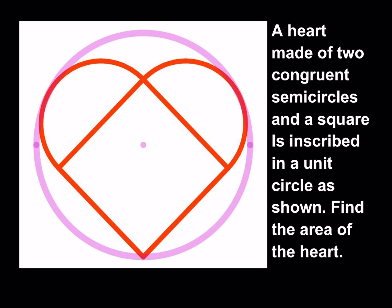So what we're going to do is first make some good connections. Notice that our heart is made up of a square and two semicircles, which basically make a full circle. So we're going to find the area of the circle and then find the area of the square, then add them up. But first we have to find the radius of the semicircles.